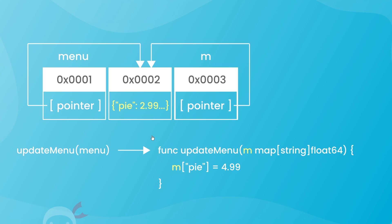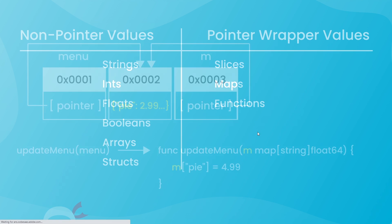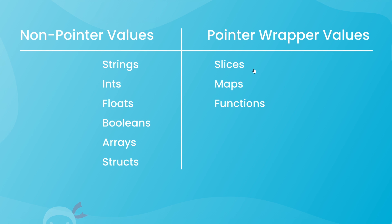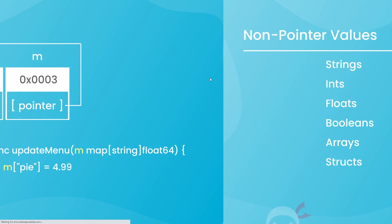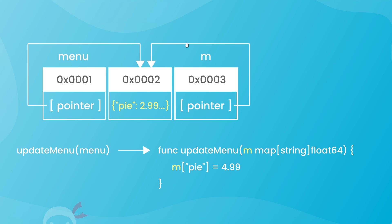So that's the difference between these two groups of types and how they work. To give them better names, we'll call them 'pointer wrapper values' and 'non-pointer values'. Now that we know how these groups work, we want to dive a little deeper and talk about pointers — the things that point to another memory location. We'll talk more about those next.